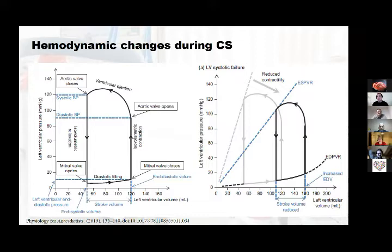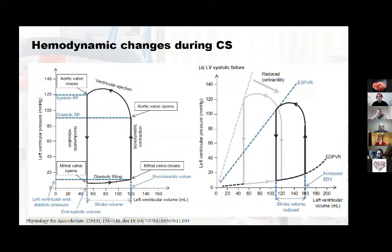As we know, during cardiogenic shock there is a reduced contractility. This will affect the end-diastolic volume — we have an increase in the end-diastolic volume and a reduced stroke volume, which will lead further to a reduced perfusion during cardiogenic shock.